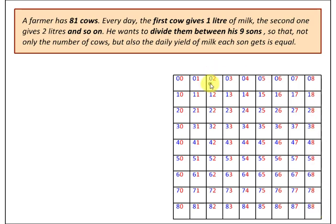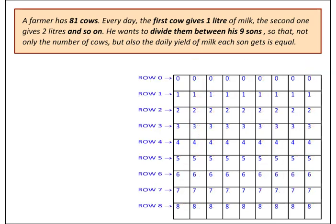All these numbers are 2-digit in base 9. I have represented the first digit in blue and the second digit in red, for good reason. If you focus only on the blue digits, they are already arranged neatly in rows: there are nine 0s, nine 1s, nine 2s, and so on.